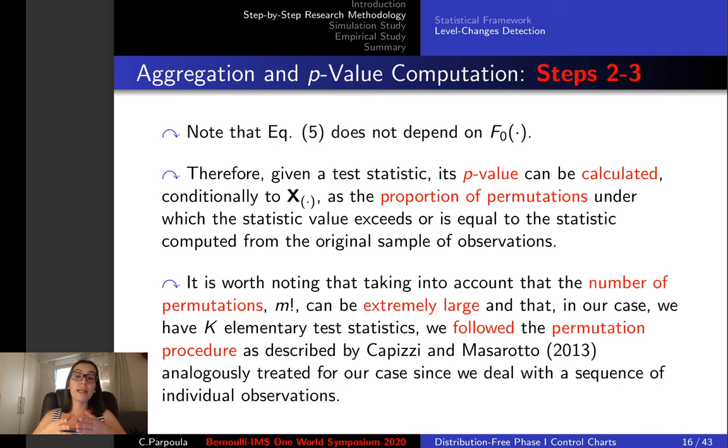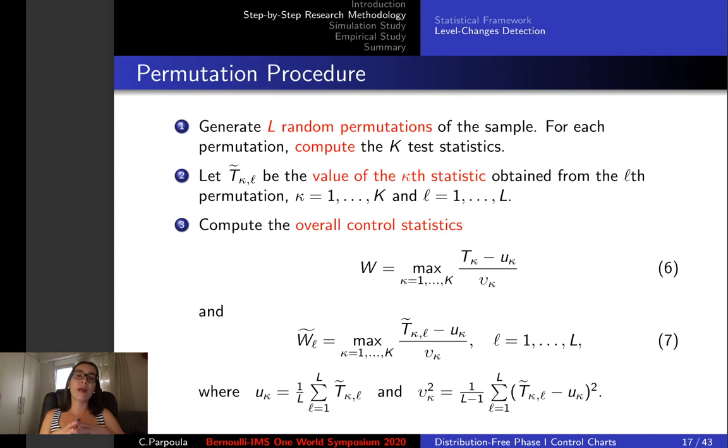However, this number can be extremely large and for this reason we followed the permutation procedure as described by Capici and Masarotto, appropriately treated for our case since we deal with a sequence of individual observations.